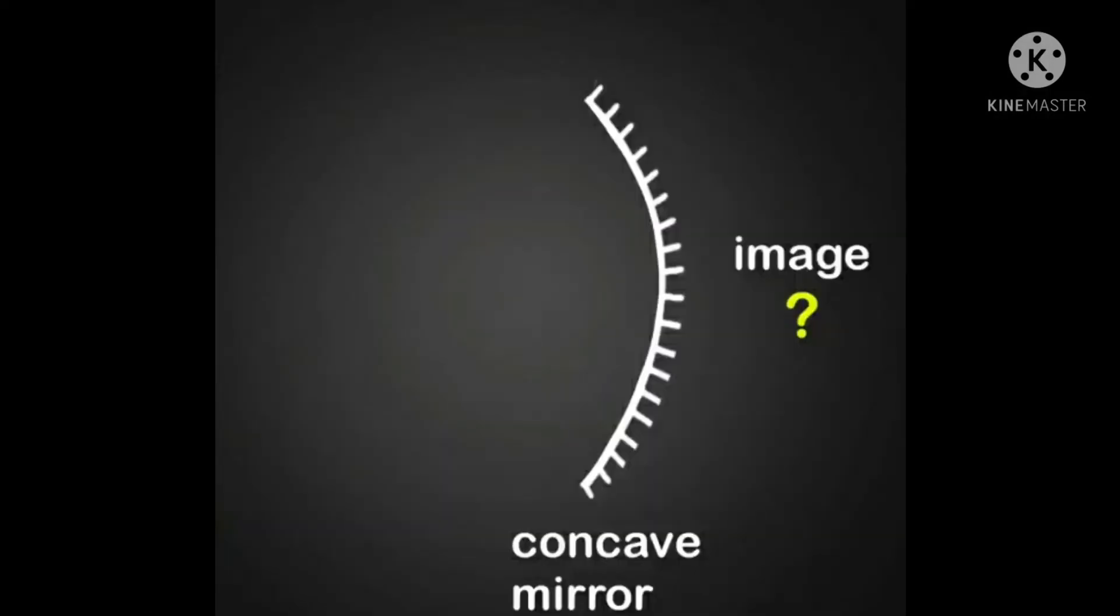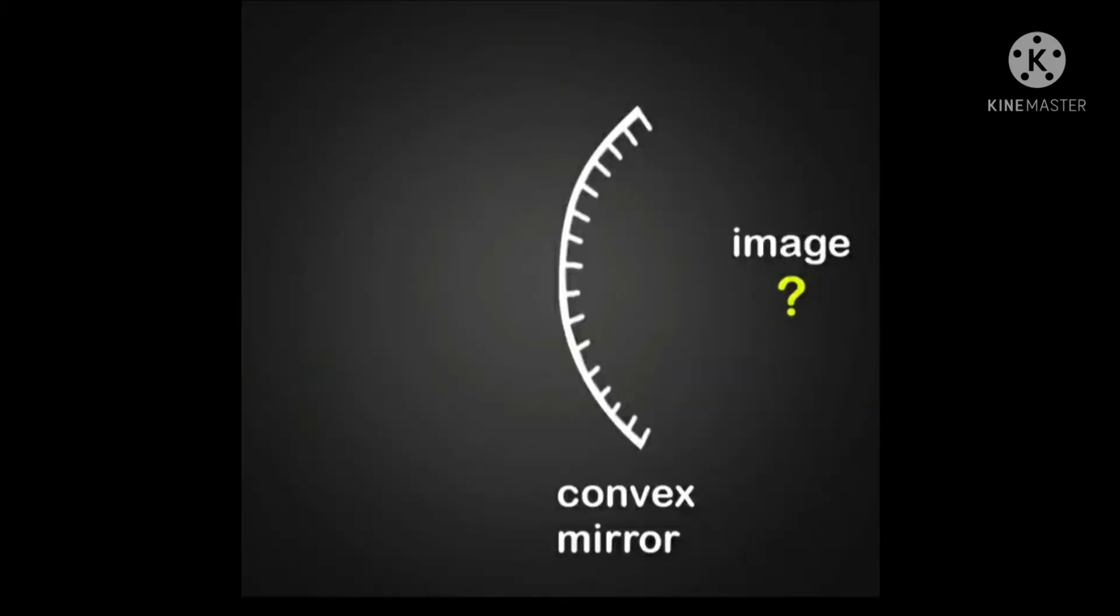But if I replace the plane mirror with a concave mirror, can we predict where the image will be formed? It's not so easy. Or if I replace it with a convex mirror, where will the image be formed? What will be its properties?